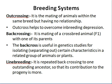Another breeding system is outcrossing. This is where animals are from the same breed but are not related to each other, and when these animals are mated it is called outcrossing. Outcrossing helps to overcome inbreeding depression. For example, if we encounter an inbred animal, we mate it with a non-relative or distantly related animal — that is outcrossing.